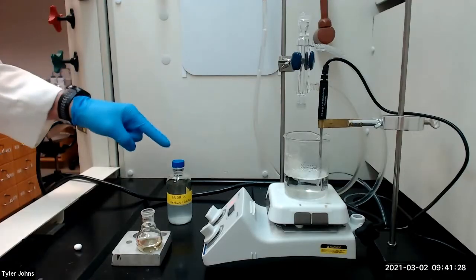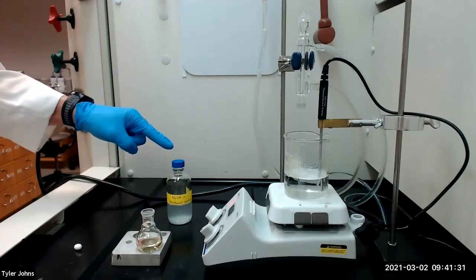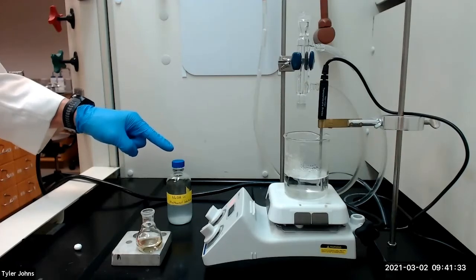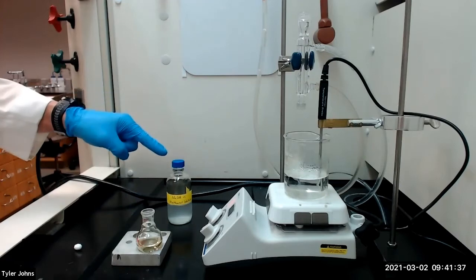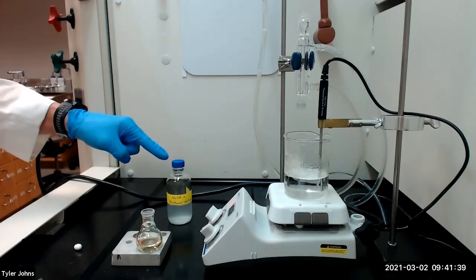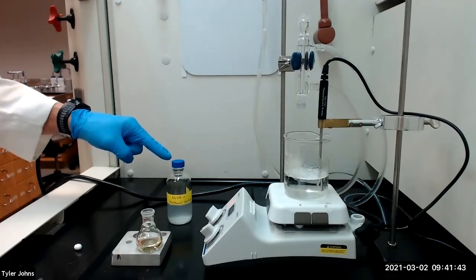We will next add 2.0 milliliters of sodium hydroxide dissolved in methanol solution to the vegetable oil in the round bottom flask. The sodium hydroxide in methanol solution is made by dissolving 0.875 grams of sodium hydroxide in 50 milliliters of pure methanol.